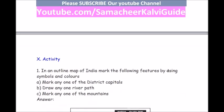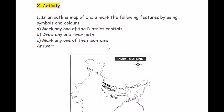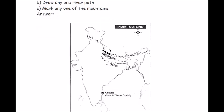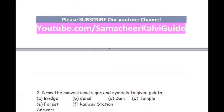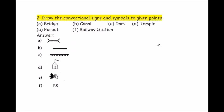Activity: in an outline map of India, mark the following features using symbols and colours — any one district capital, any one river path, any one mountain. Question 2: draw the conventional signs and symbols for the following — bridge, canal, dam, temple, forest, railway station. See the symbols and draw.